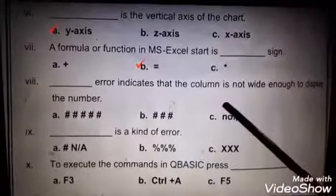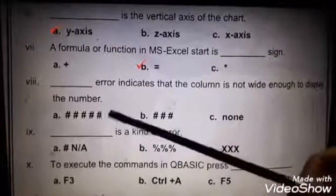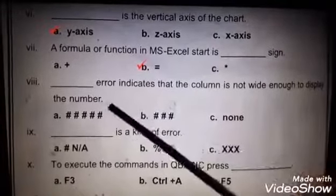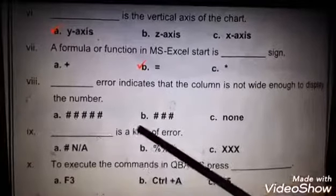Number 8: Dash error indicates that the column is not wide enough to display the number. Jab Excel mein hamara jo hota hai column us mein data zyada bara hota hai to kaun sa error aata hai? A: yeh jo hain 5 hash, B: triple hash, C: none.